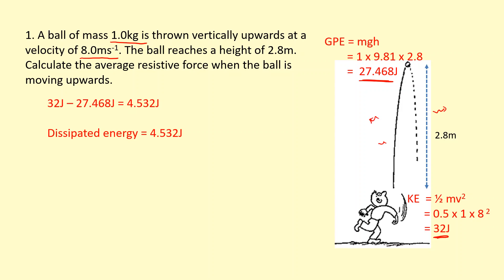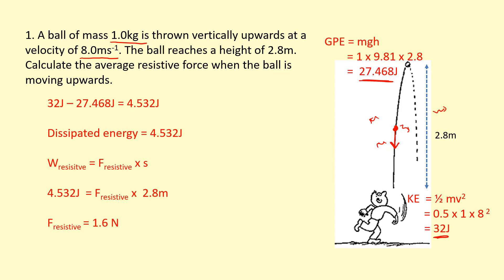As the ball was going up, it was pushing against the air particles, doing work against the air resistance force, and so that energy has been transferred to the surroundings. We can say that the work done against the resistive forces — which is the dissipated energy — equals the resistive force times the distance moved parallel to the resistive force. In this case the resistive force is downwards and the distance moved parallel to that is the height. Rearranging gives a resistive force of 1.6 newtons.